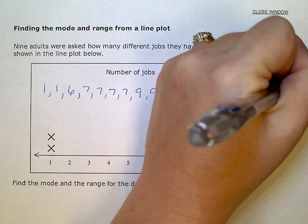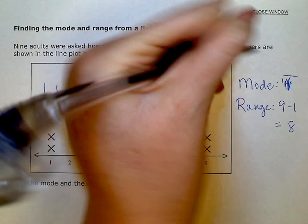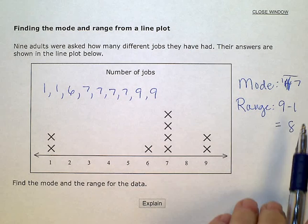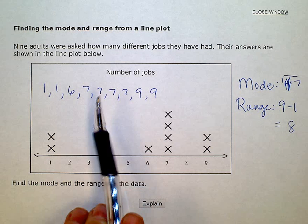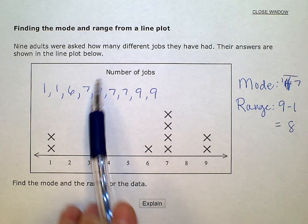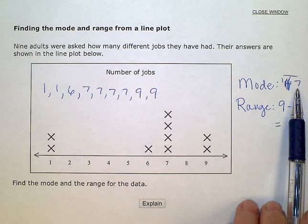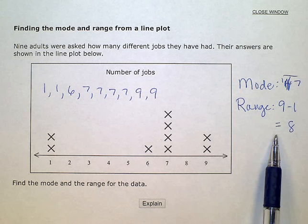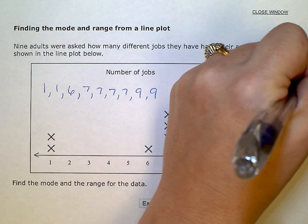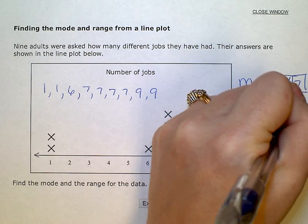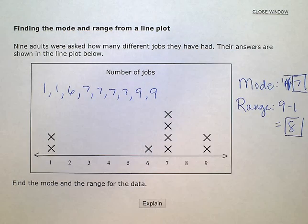I wrote the number four here instead of seven. So, seven is the mode. There's four of those — that's where I got the four from. But the mode is seven, the range is eight. I'll highlight those two answers.